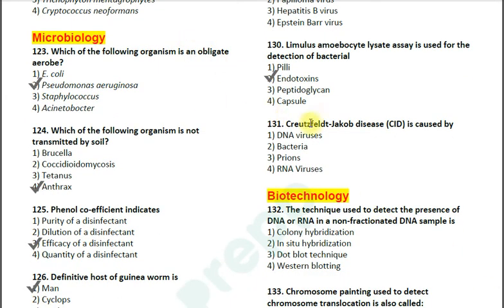Question number 131: Creutzfeldt-Jakob disease (CJD) is caused by — option 1: DNA viruses; option 2: bacteria; option 3: prions; option 4. The correct answer is option 3 — prions. Prions stands for proteinaceous infectious particles.